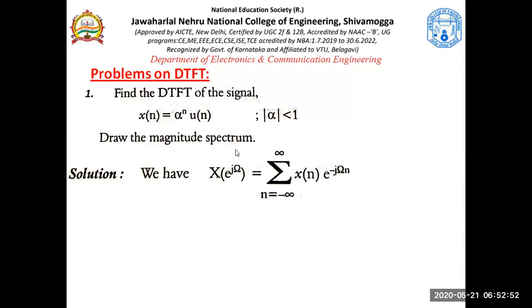If you compare this with the Z-transform equation, it is very similar. The Z-transform is X(Z) = Σ X(n)·Z^(−n), so in place of Z we now have e^(jω). That means Z^(−n) becomes e^(−jωn). You have to remember this equation — it makes the section much easier.